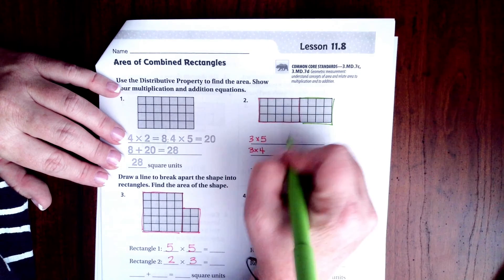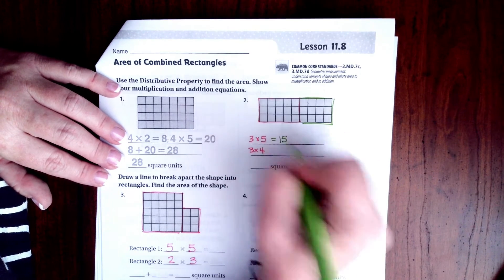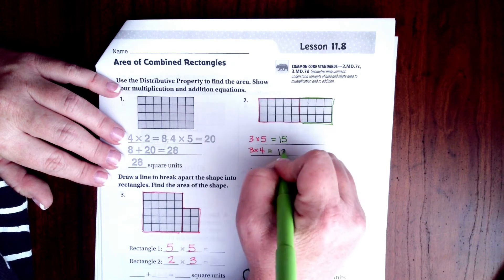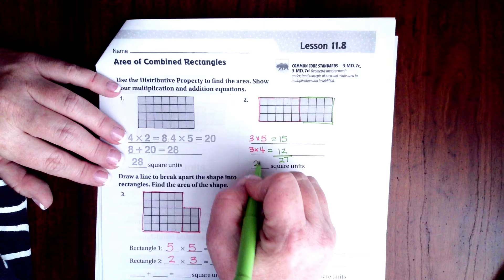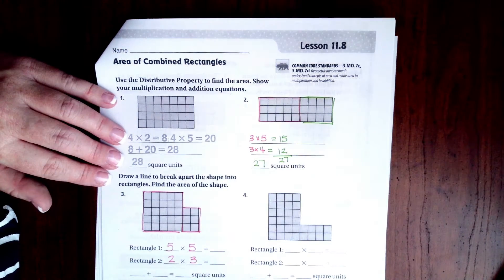So 3 times 5 is 15, and 3 times 4 is 12. So now when I add those two, I get 27, so 27 square units.